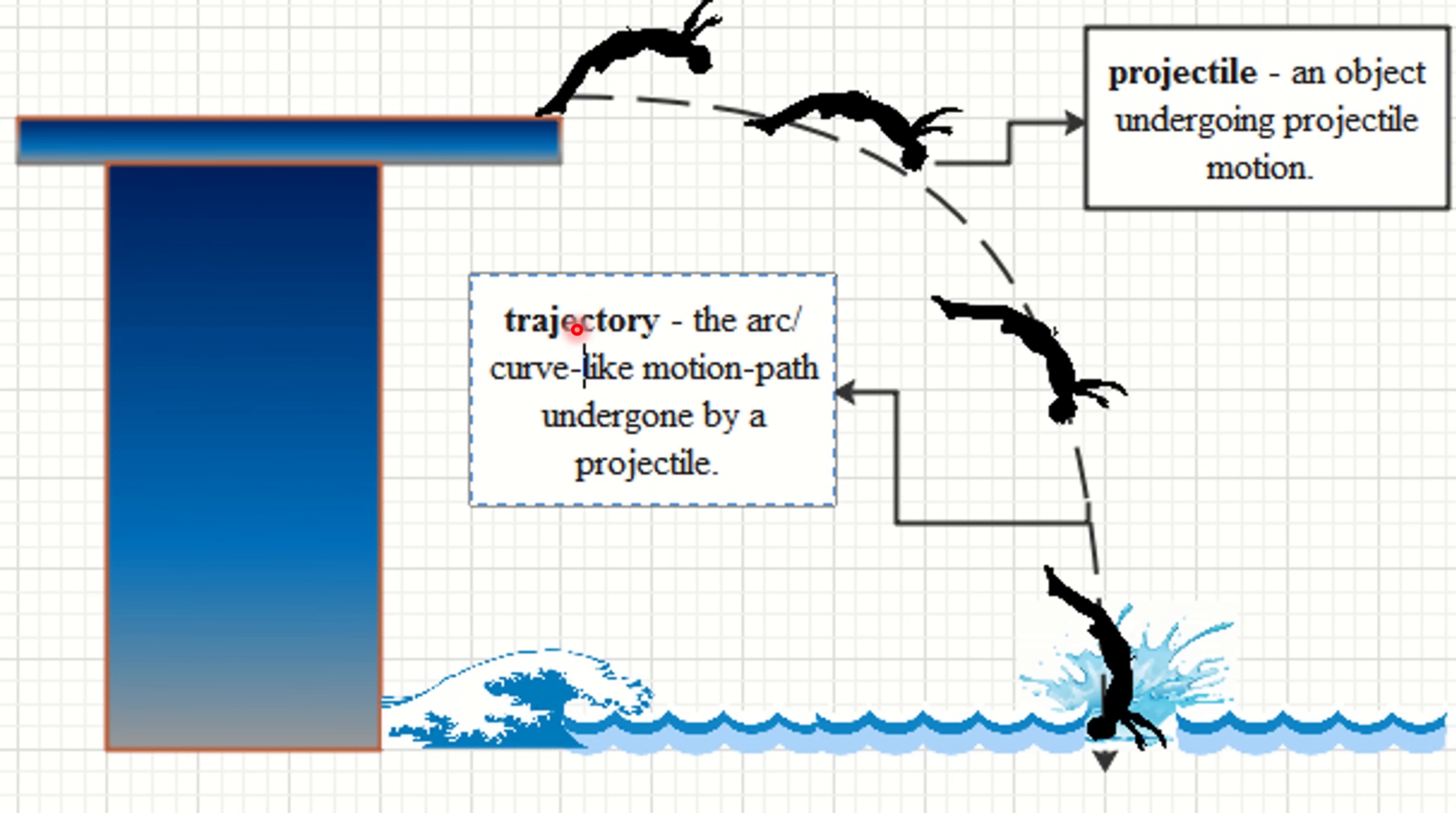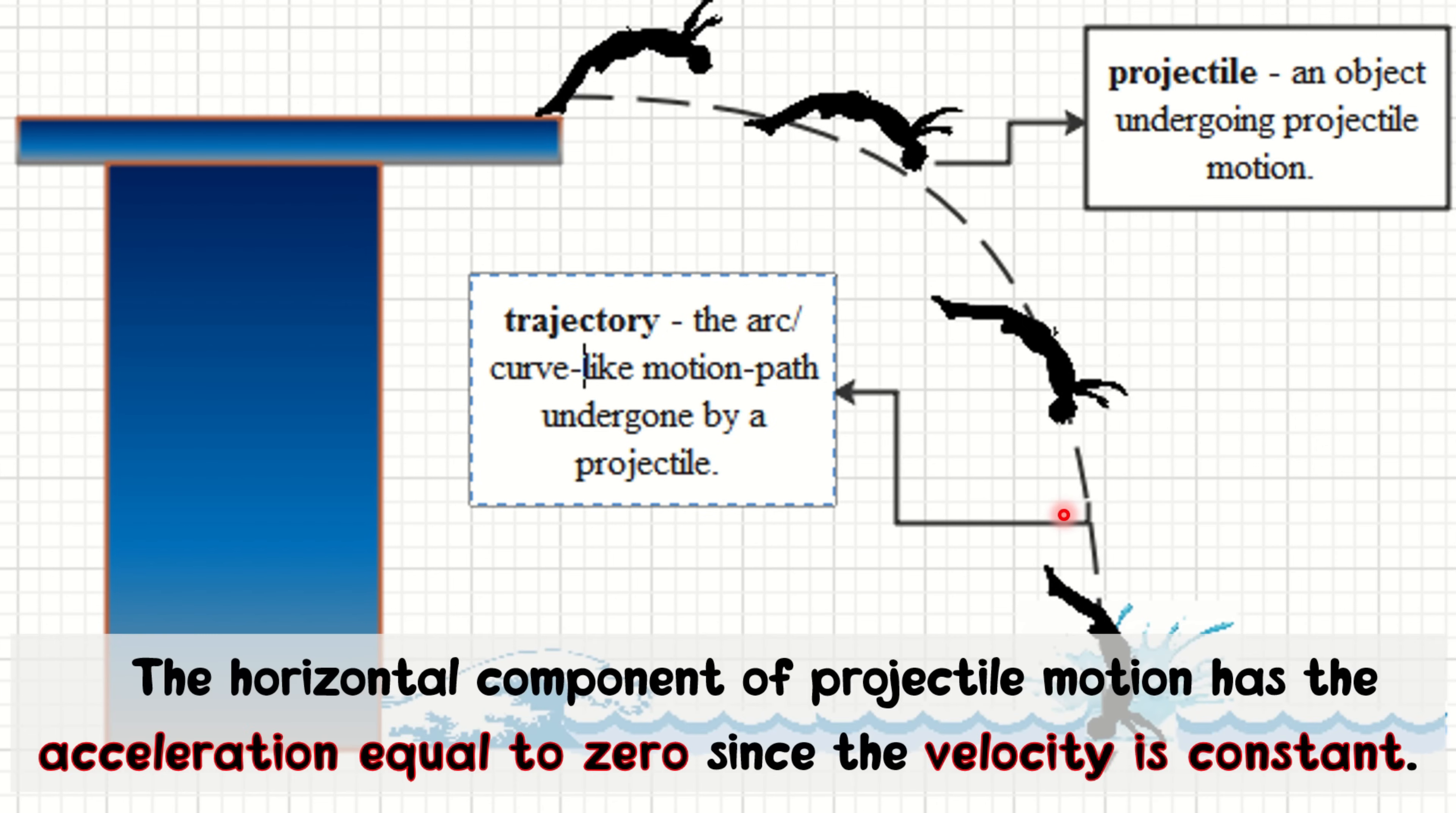From the previous lesson, you are introduced to the basic concepts of projectile motion such as trajectory and the definition of projectile motion itself. A body in projectile motion has been established to have a parabolic trajectory with horizontal and vertical components. The horizontal component of a projectile motion has acceleration equal to zero since the velocity is constant.